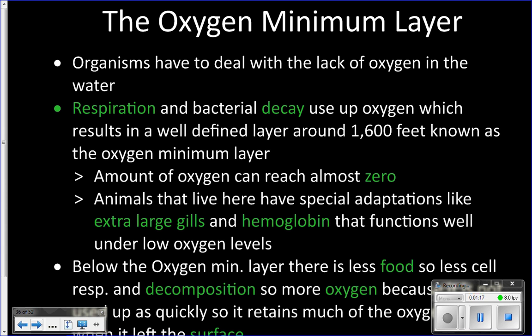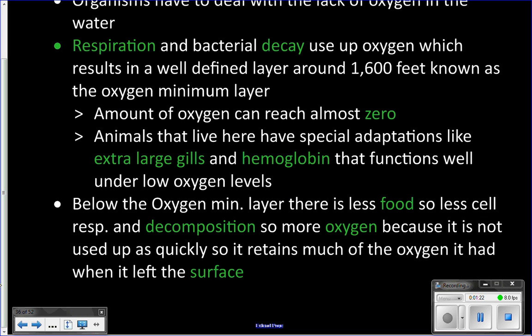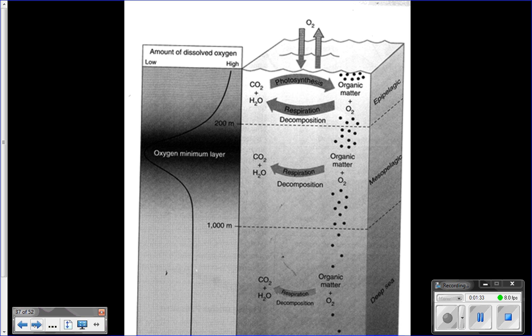So here's a picture to explain this. The top layer is the epipelagic zone, and in this top layer of water you have enough light for photosynthesis, so you've got primary producers putting oxygen into the water. You're also at the surface, so oxygen is able to come into the water from the atmosphere.